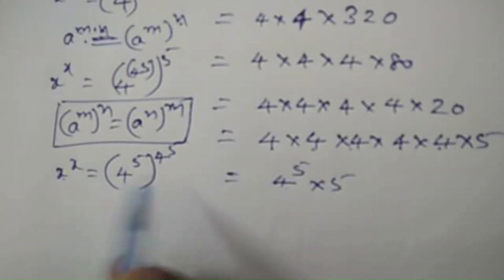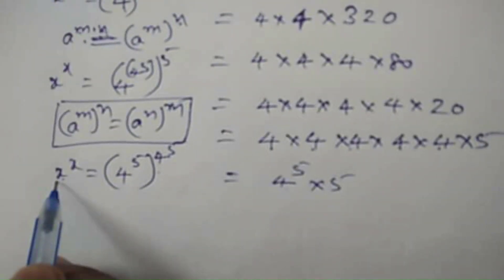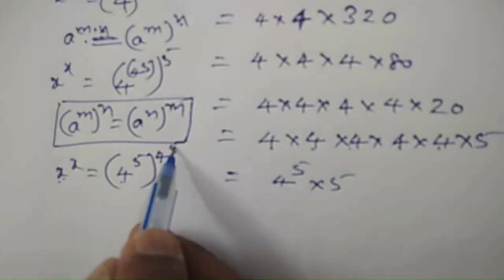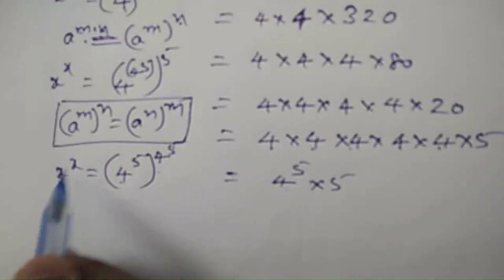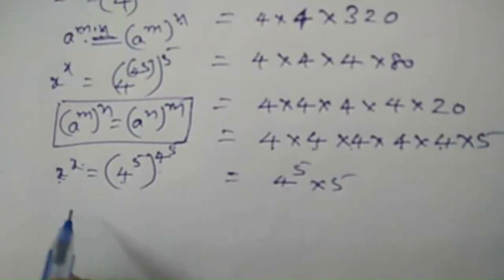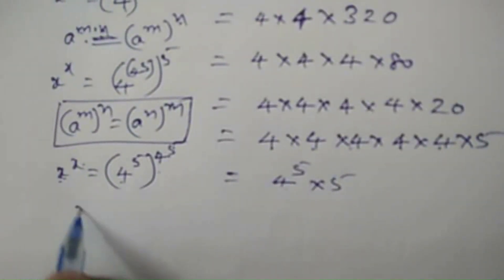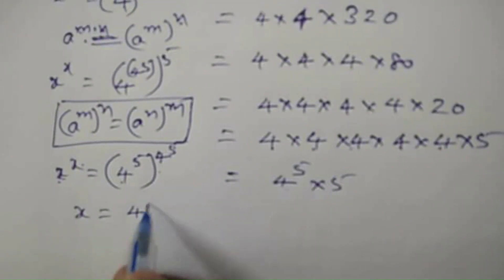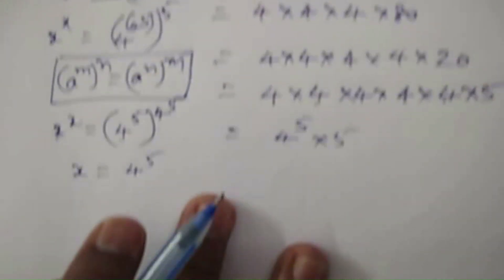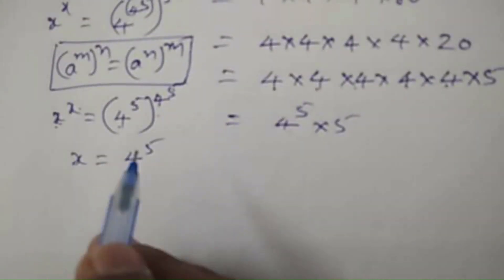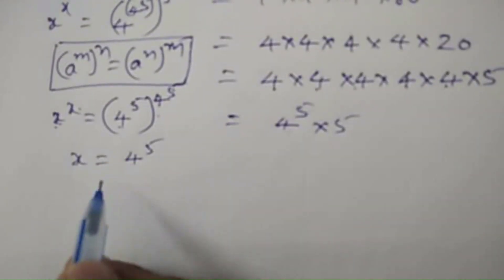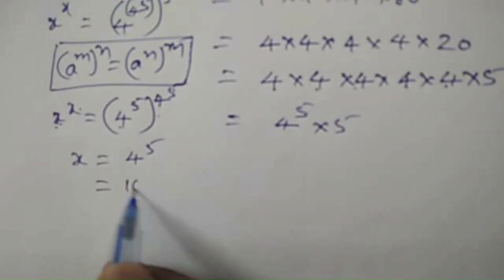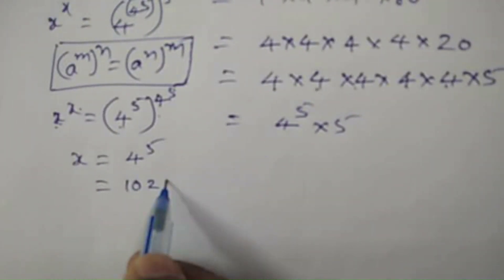By comparing these two, we can see that 4 to the power of 5 appears in both positions, and x and x are both repeating. So we can say x is equal to 4 to the power of 5, which equals 1024.